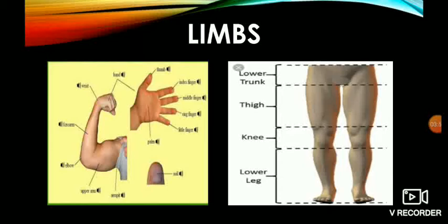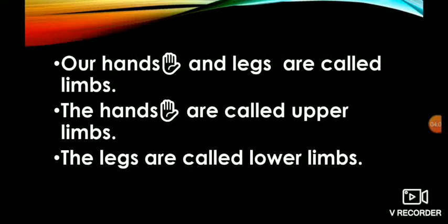The next picture consists of the lower trunk, and below it there is the thigh, knee and lower leg. Our hands and legs are called limbs. The hands are called upper limbs and the legs are called lower limbs.